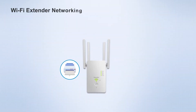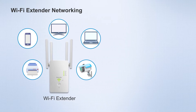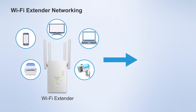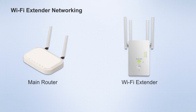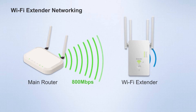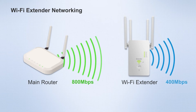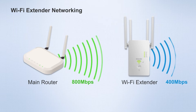In contrast, the number of devices connected to a Wi-Fi extender depends on the main router's bandwidth. The network speed of the extended Wi-Fi is generally only half of the original speed, and if the signal passes through a wall, there will be even greater loss.